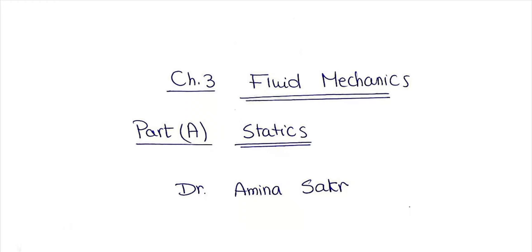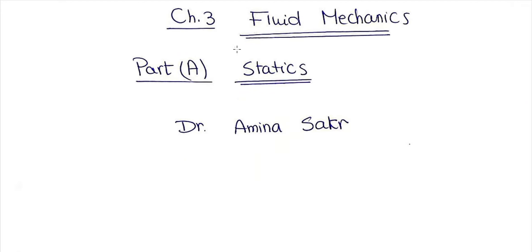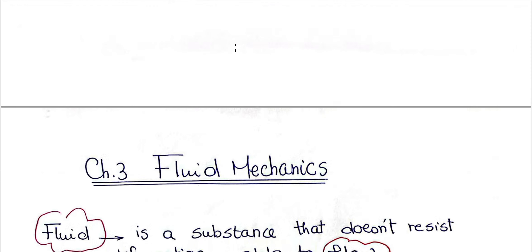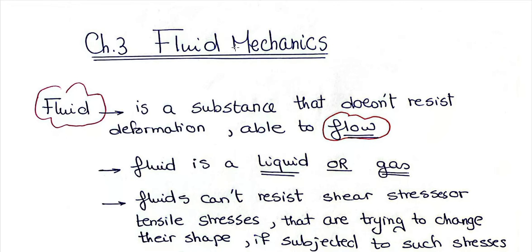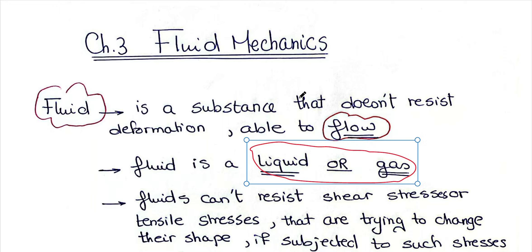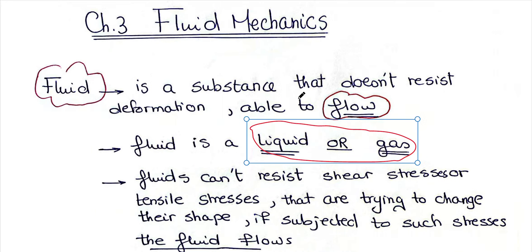In chapter 3 we will study fluid mechanics, and in this lecture we will study only part A, which is the static part. A substance is called a fluid when it has the ability to flow. Any substance that can flow is called a fluid. This applies to liquids and gases. They cannot resist any shear stresses or tensile stresses, in contrast with solids.